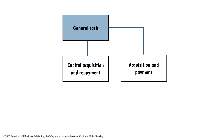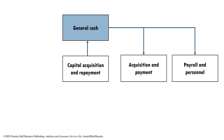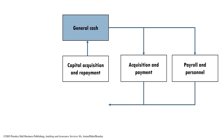Because no man is an island, no business is an island either — we would need people to help us out. So the payroll and personnel cycle will then be activated. For those of you who are fans of cost accounting, you can guess what happens next: we have materials, we have labor, and because of that, we activate the inventory and warehousing cycle, where we convert from raw materials to work in process and finally to finished goods.